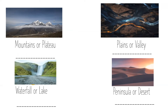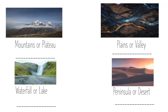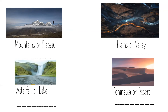The first question is: mountains or plateau? We have to choose whether the picture shows a plateau or a mountain. It's very tall, going up into the clouds, and since a plateau is flat land, this one is a mountain.